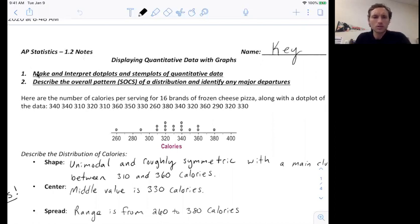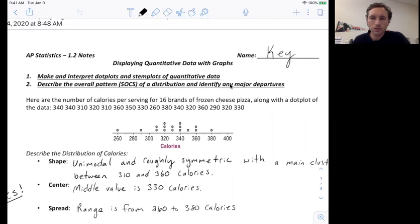Those are how to make and interpret a dot plot and a stem plot of quantitative data, and how to describe the overall pattern of a distribution and identify any major departures. So to do this, let's look at this first example problem.